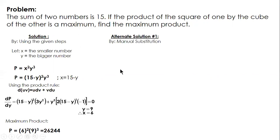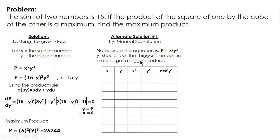Alternate solution one: manual substitution again. Since it's x squared y cubed, pick two numbers with sum 15, square x, cube y, then get the product. By inspection, the maximum is when x equals 6 and y equals 9.